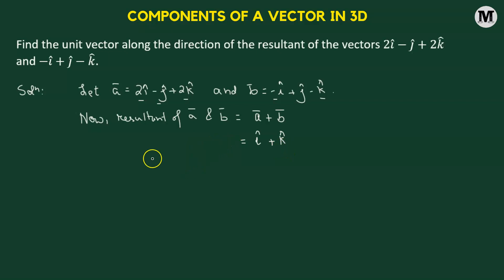Now let's name it c. So let vector c be represented by i cap plus k cap. Our goal will be to determine the unit vector in the direction of c. That means because c is the resultant of a and b, the unit vector in the direction of c will be, all we have to do is take the vector c and divide it by its own magnitude. That means our goal will be to find out the magnitude of c first.